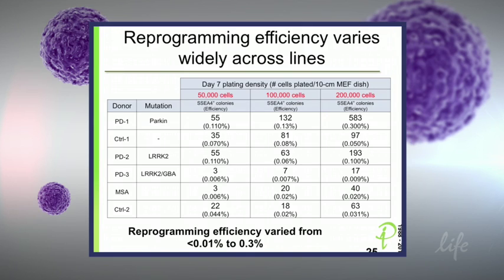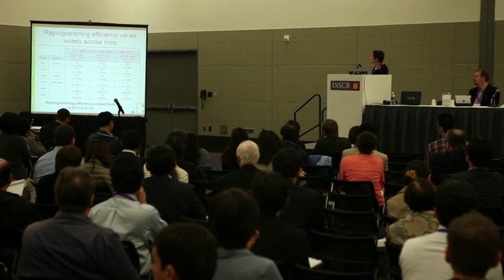Here I wanted to show you the reprogramming efficiency and how it varies widely across the lines we've reprogrammed. We had six different lines — four Parkinson's lines and two control lines. Some lines had very low efficiency, only three colonies or 0.06 percent, while some reprogrammed really well at 0.3 percent. We think that has to do with the age of the donor — this case was a young individual at age 19 at the time of biopsy. Other lines are fairly severe cases, including a double mutation, and multiple system atrophy, which is a very fast, progressive form of Parkinson's disease.